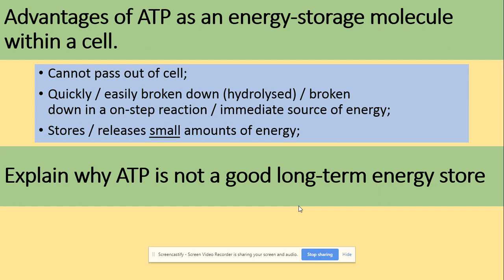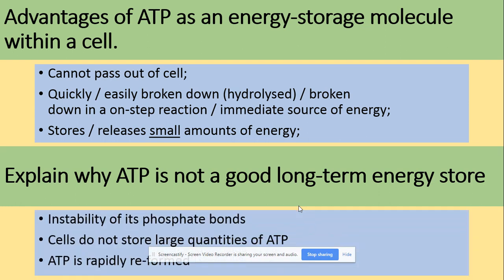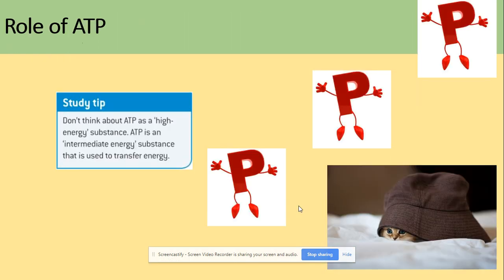Why is ATP not a good long-term energy store? The bonds between the phosphates are unstable. Cells do not store large amounts of ATP, and it is repeatedly reformed. Remember that the energy is stored between the bonds.